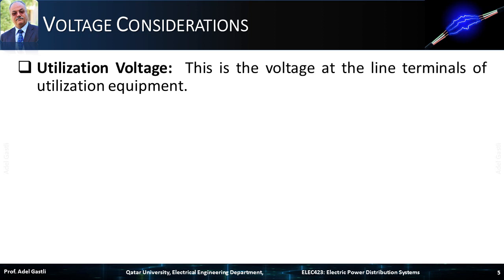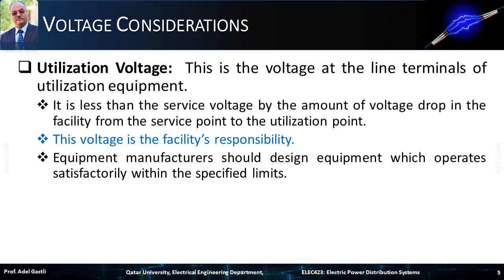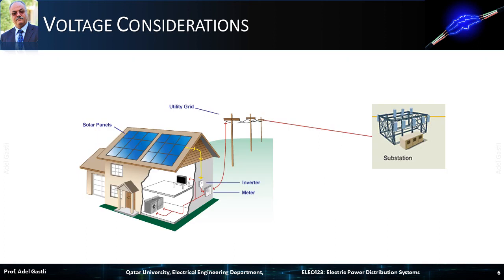The utilization voltage is the voltage at the line terminals of utilization equipment. It is less than the service voltage by the amount of voltage drop in the facility, from the service point to the utilization point. This voltage is the facility's responsibility to respect and assure. Equipment manufacturers should design equipment which operates satisfactorily within the specified limits. These limits allow for some voltage drop within a facility, so service voltage requirements are normally tighter than utilization requirements.